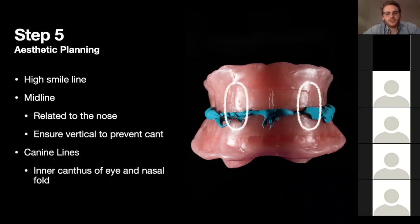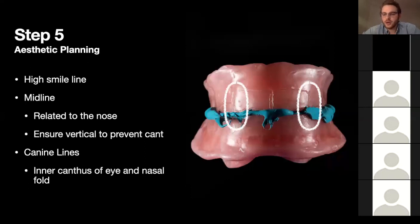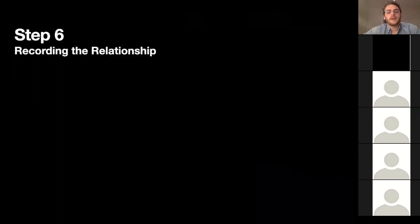Also mark the canine lines, which represent the most buccal aspect of the canine. You run a vertical line from the inner canthus of the eye, past the nose, and mark it on each side. This gives your technician the position and a rough idea of the size of the teeth, since the six front teeth are typically all in proportion. It allows them to pick an appropriate set of teeth.